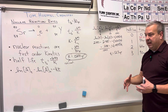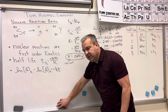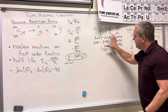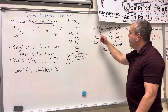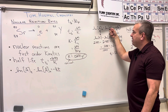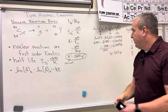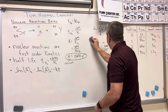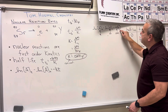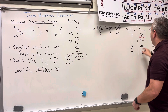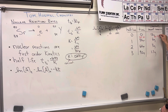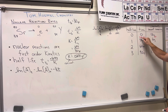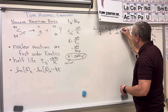Even though nine grams is halfway between six and twelve grams, the time comes out to 12.5 years — not 15. Now I want to work this equation backwards, because solving for the amount At is where a lot of students have trouble. So this time, instead of solving for t, we're going to start with 12.5 years and solve for the nine grams.